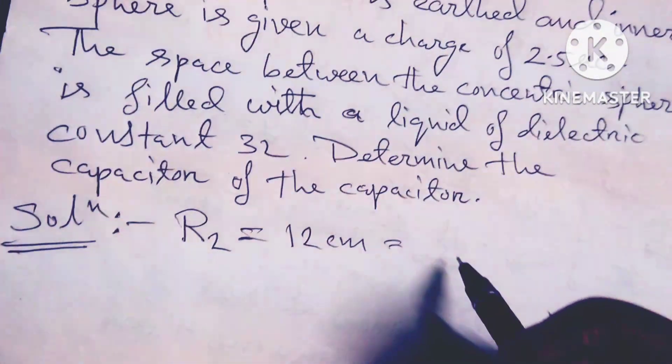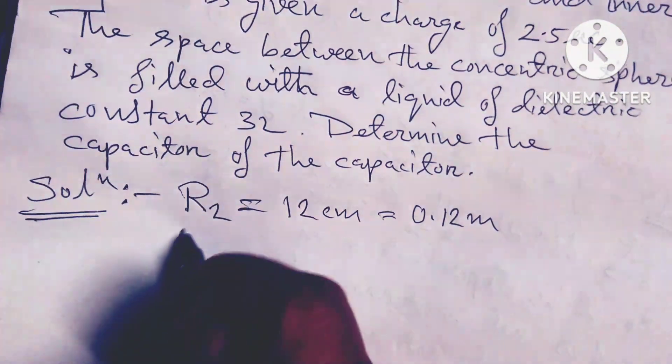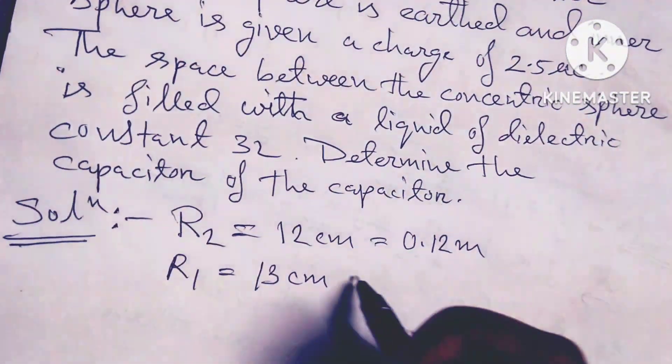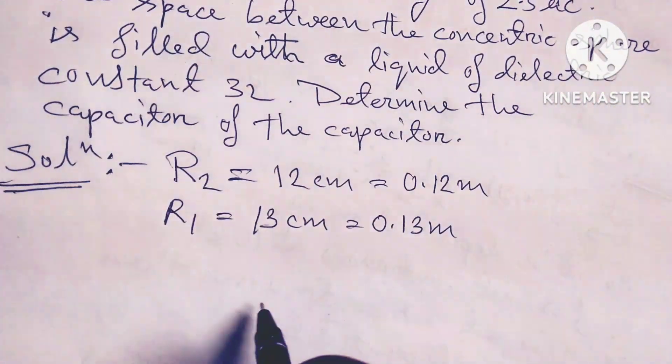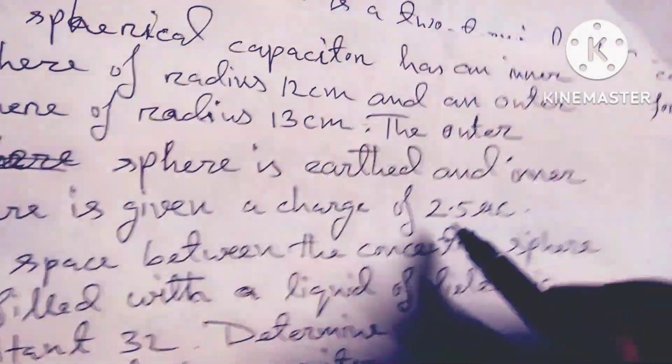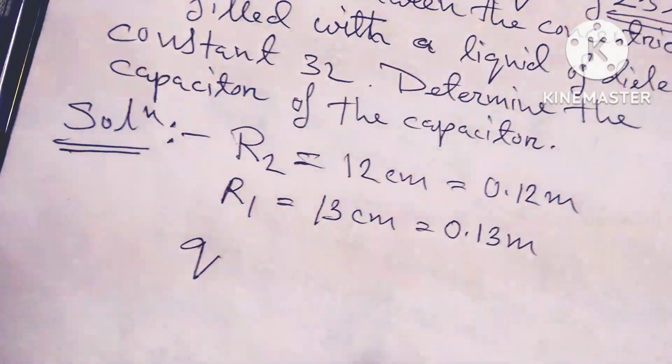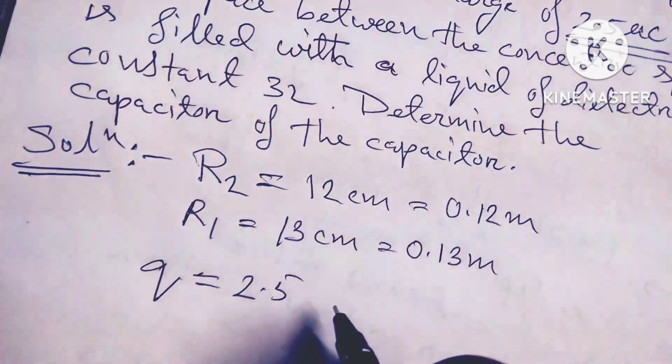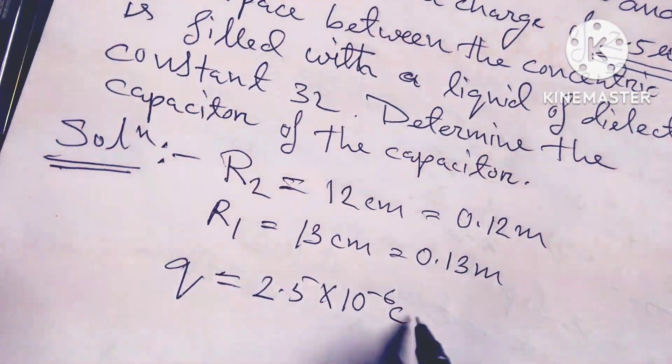R₂ = 12 cm = 0.12 m, R₁ = 13 cm = 0.13 m, and Q = 2.5 × 10⁻⁶ C.